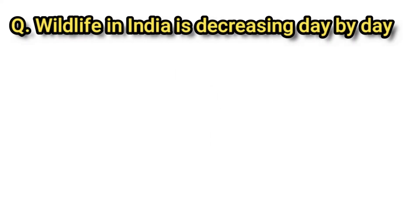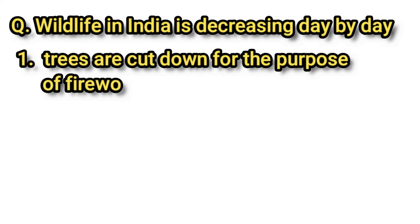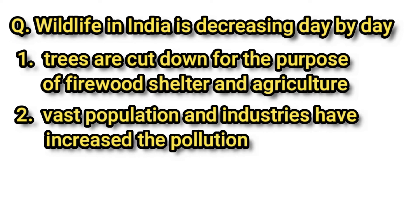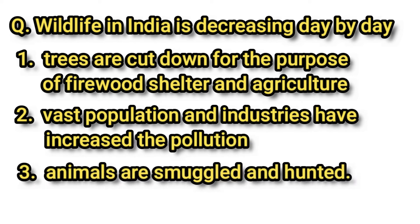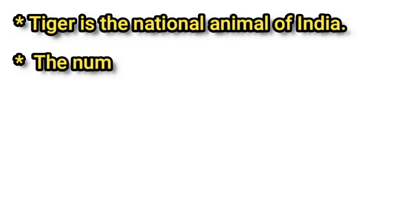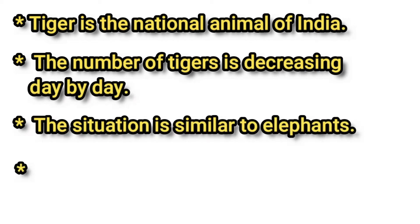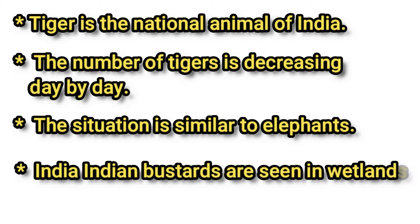Wildlife in India is decreasing day by day because trees are cut down for firewood, shelter, and agriculture. Vast population growth and industries have increased pollution, and animals are smuggled and hunted. The tiger is the national animal of India, but its numbers are also decreasing. The situation of elephants is similar. The great Indian bustard is seen in wetlands, but the number of birds has decreased a lot. Therefore, the government of India has declared them as endangered and protected.